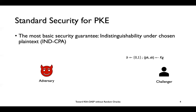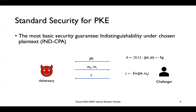In the IND-CPA game, the challenger chooses a bit B and runs the key generation to get the public key and the secret key, then sends the public key to the adversary. The adversary chooses two messages M0 and M1 and sends them back to the challenger. The challenger, based on the bit B, encrypts either M0 or M1 under the public key PK and gets the ciphertext C, and sends it back to the adversary. The adversary needs to guess the bit B. We say the scheme is secure if the advantage of the adversary in guessing B is very close to half.